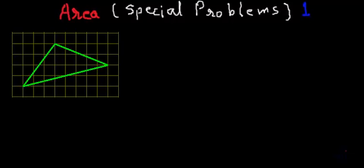Hi, in today's video we will learn how to find the area of geometrical figures where they are not exactly lying on the grid properly. Like in this case, if I call this triangle A, B and C — all the points A, B and C are lying on the junction points of the grid, but none of the lines are either on the horizontal or vertical line of the grid. So in this case, finding the dimensions of the base and height becomes very difficult.